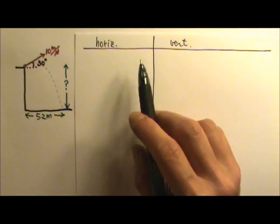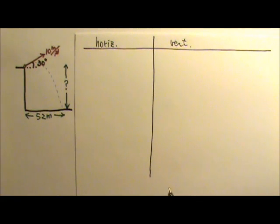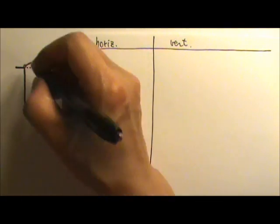Again, we start with this chart separating the horizontal and vertical motion. To find the initial velocities, horizontal and vertical components, we make this rectangle.